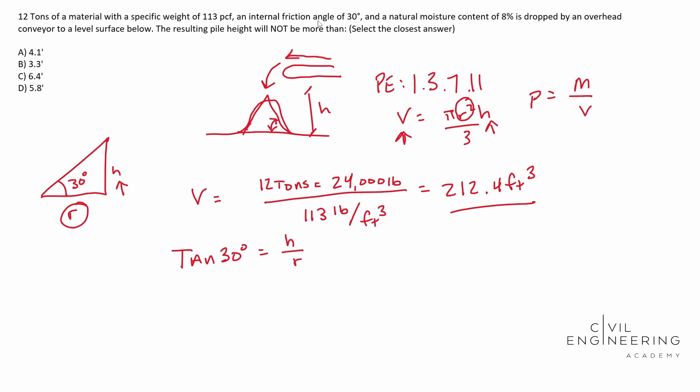So notice here, we can actually make it to where our R is a function of our H. So we can multiply by R divided by the tangent of 30, and you should end up with R. R is equal to H over the tangent of 30.